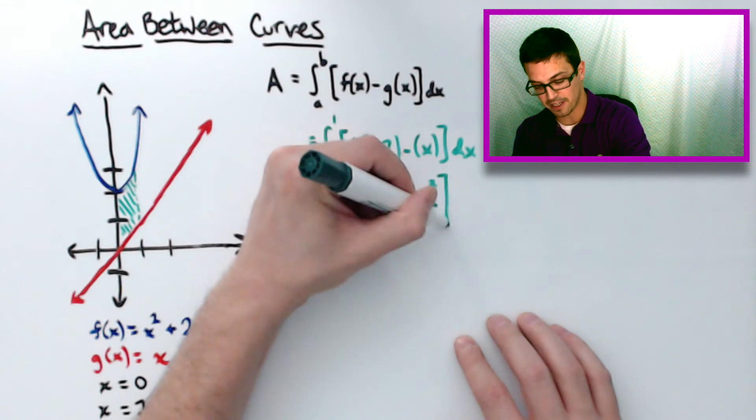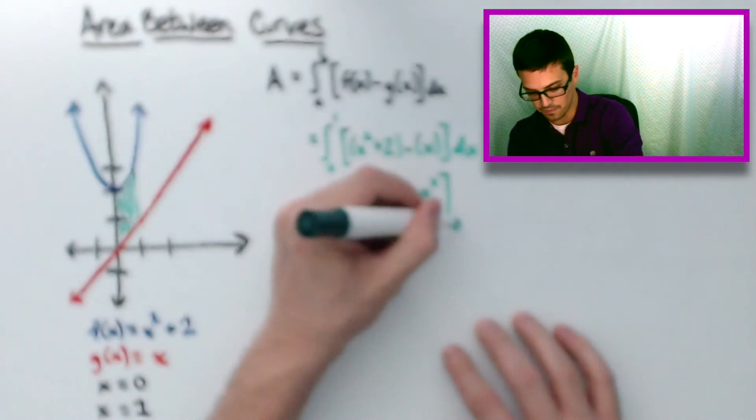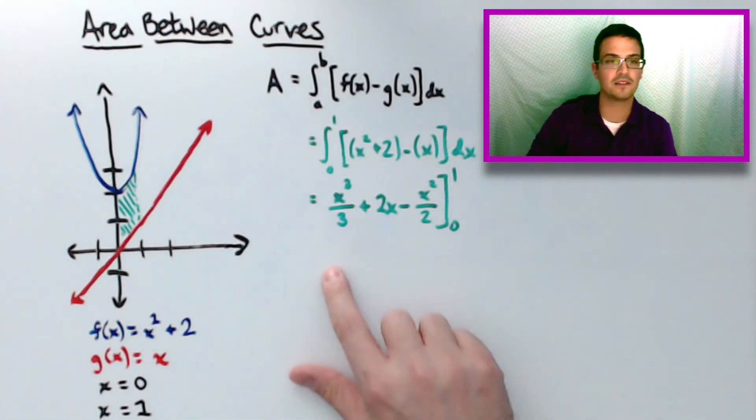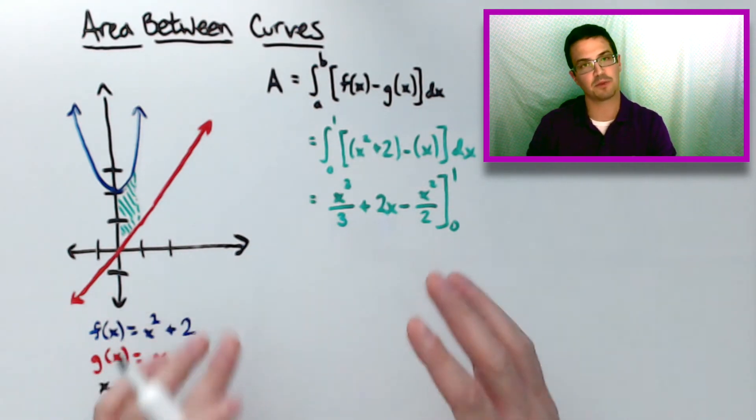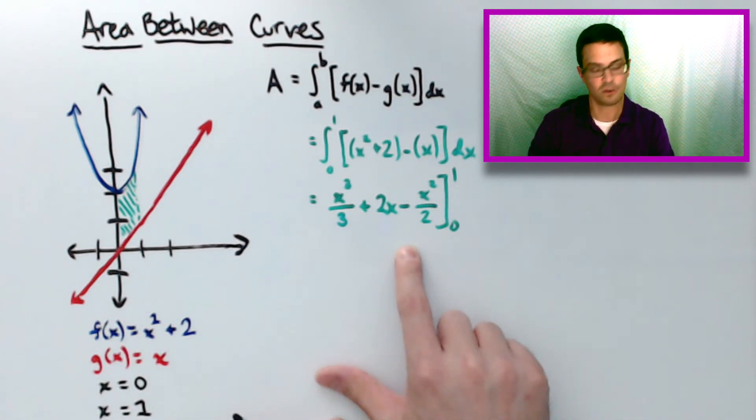And then we're integrating this from 0 to 1. So this means we're going to plug the 1 in to this, and whatever that value is, we're going to subtract it from when we plug 0 in to the same equation.